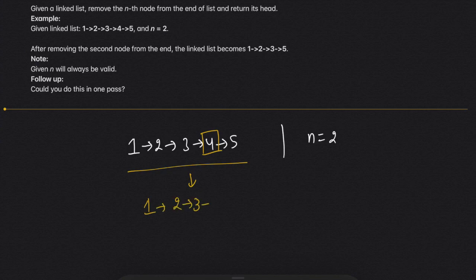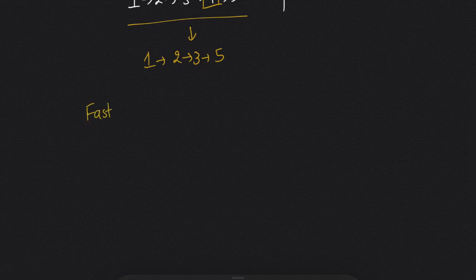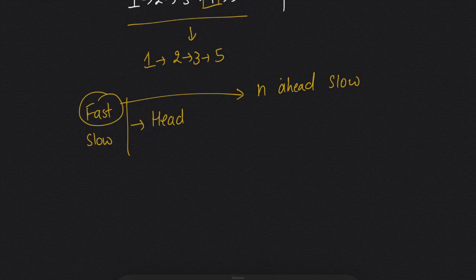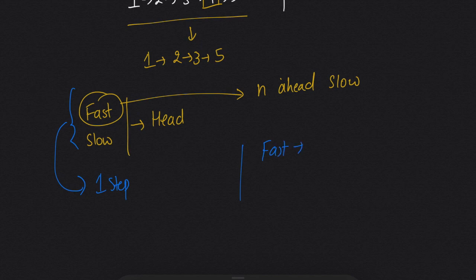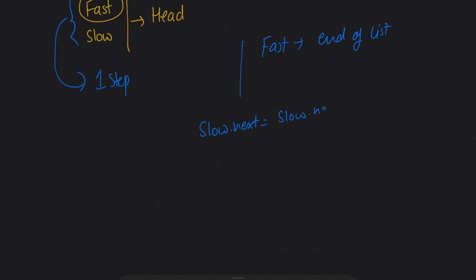Let's see how we can do this. We will take two pointers, fast and slow, both pointing to head at the start. We will increase fast by n steps. Once fast is n steps ahead of slow, we will increase both fast and slow by one step. Once fast reaches the end of the list, we will point slow's next to slow's next dot next.